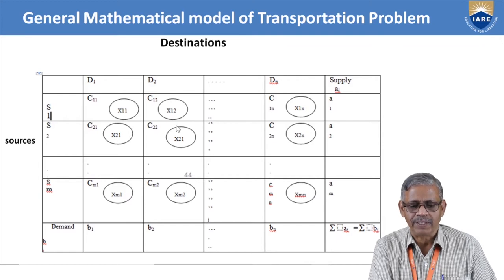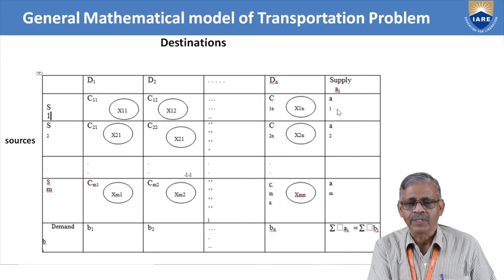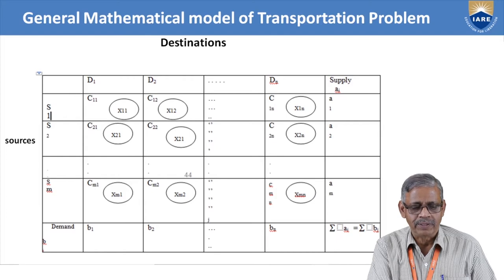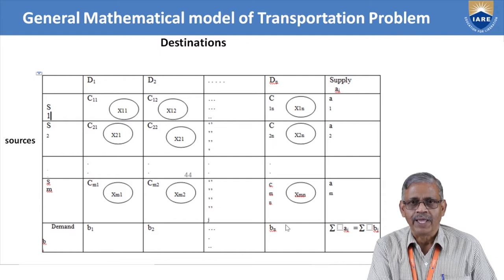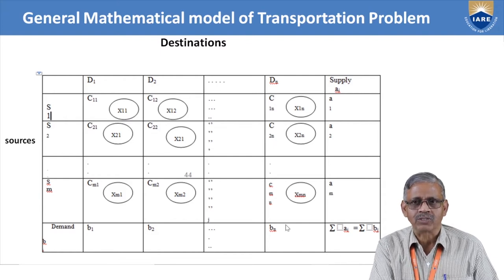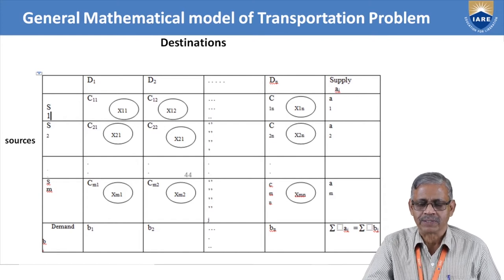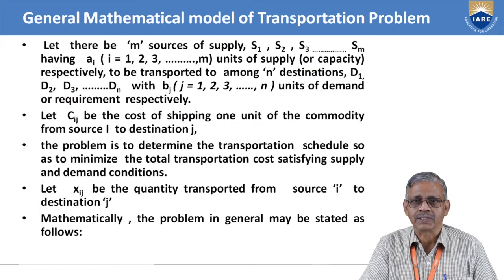For each source there is a supply — supply positions A1, A2, up to AM. Similarly, for each column there is a warehouse requirement or demand: B1, B2, up to BN. The total sum of supply and the sum of demand should be equal. Like the transportation problem, this also has a set of constraints and an objective function.